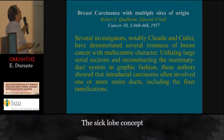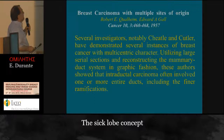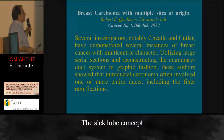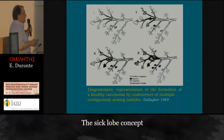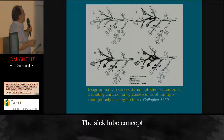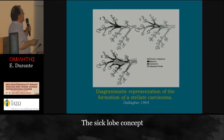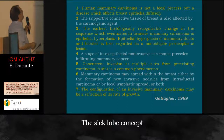Also, breast carcinoma with multiple sites of origin was described by Qualine. Several investigators, notably Chitton and Cutler, demonstrated several instances of breast cancer with a multicentric character. Utilizing large serial sections and reconstructing the mammary duct system in graphic fashion, these authors showed that intraductal carcinoma often involved one or more entire ducts, including the finer ramifications. Gallagher was the author who first described early carcinoma of the breast, making a reconstruction with diagrammatic representation of the formation of a knobby carcinoma. Also shown is a representation of the formation of stellate carcinoma within the ductal tree, with carcinoma inside the duct.